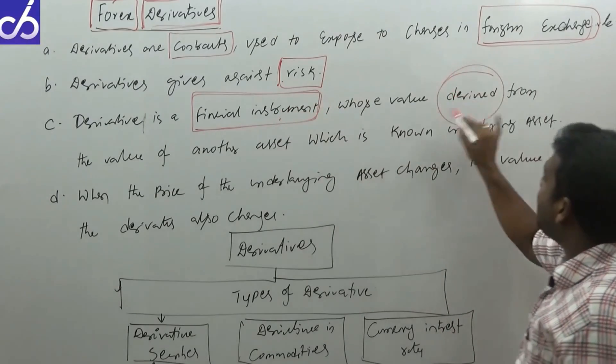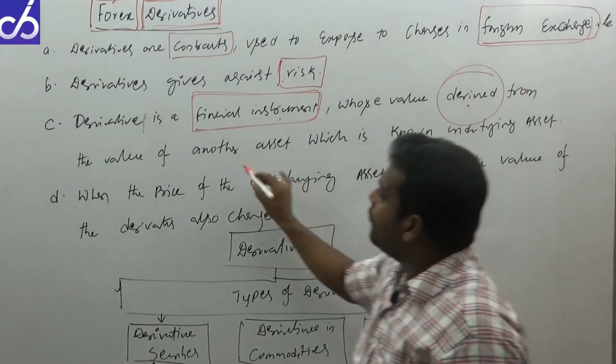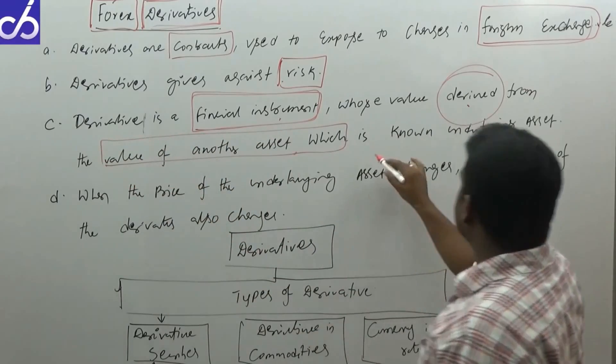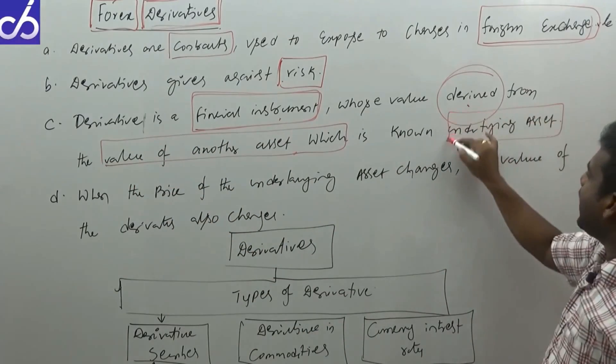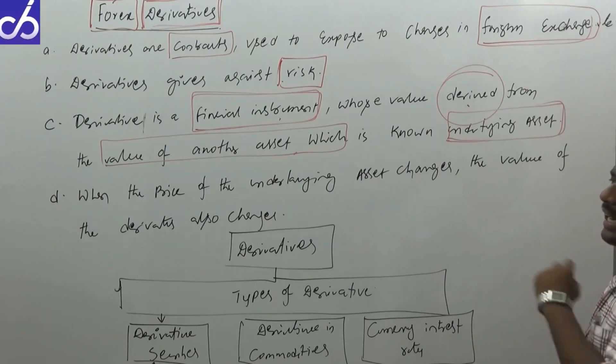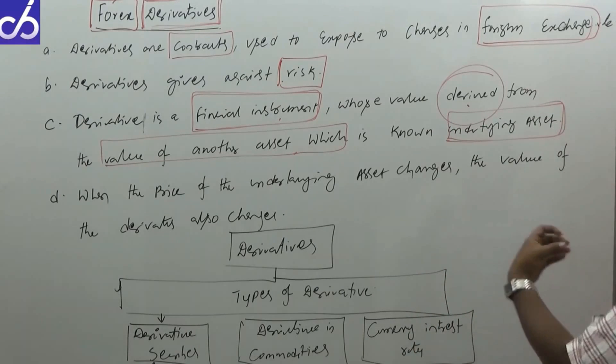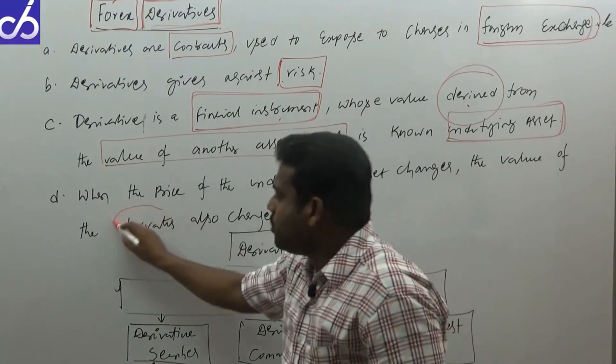This financial instrument's value is derived from the value of other assets, which is known as the underlying asset. When the price of the underlying asset changes, the value of derivatives also changes.